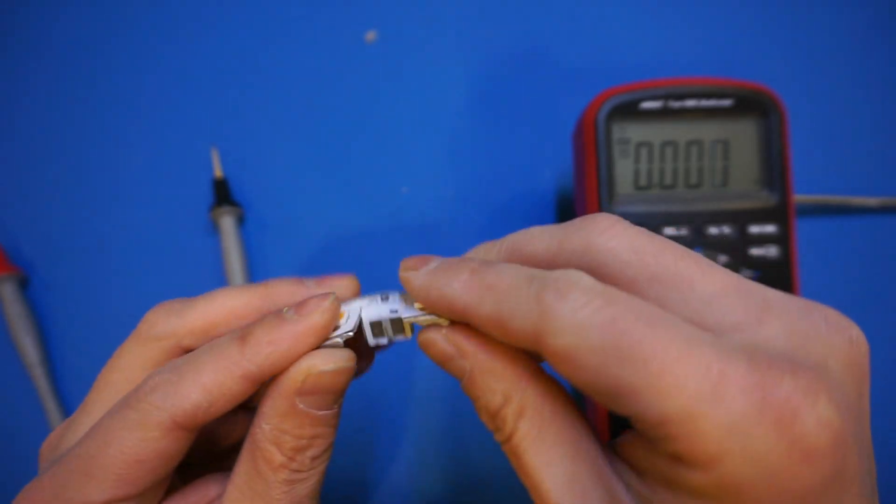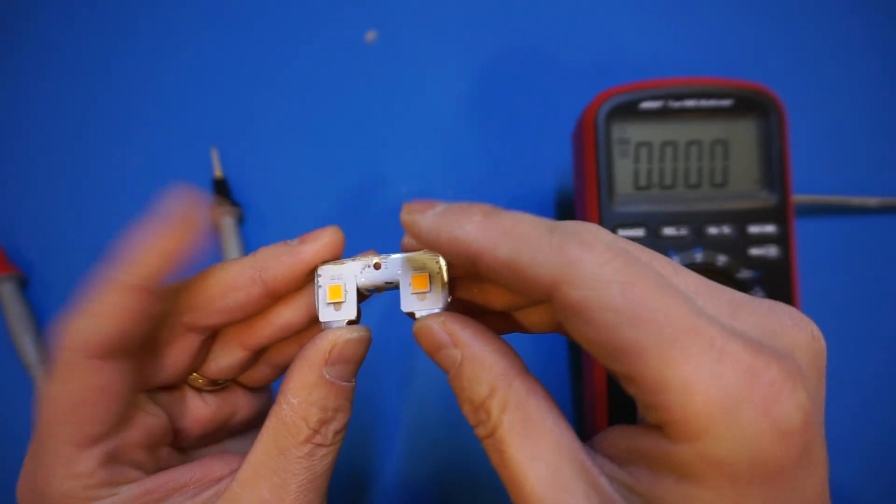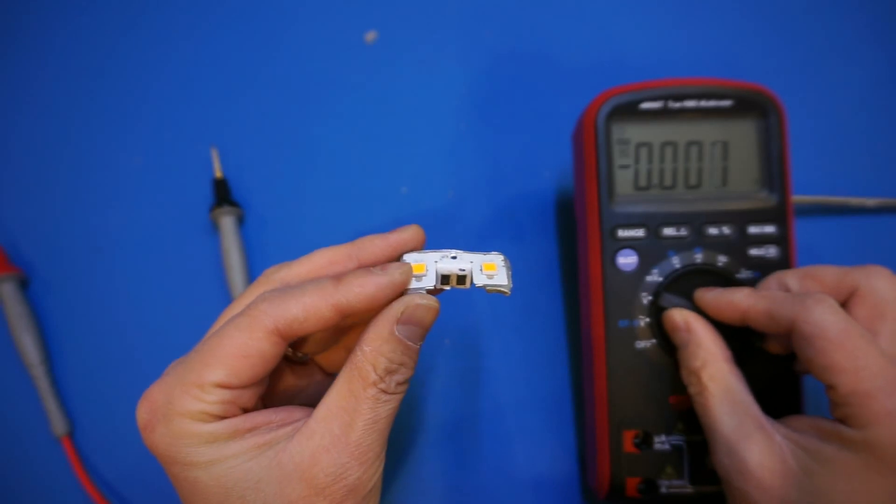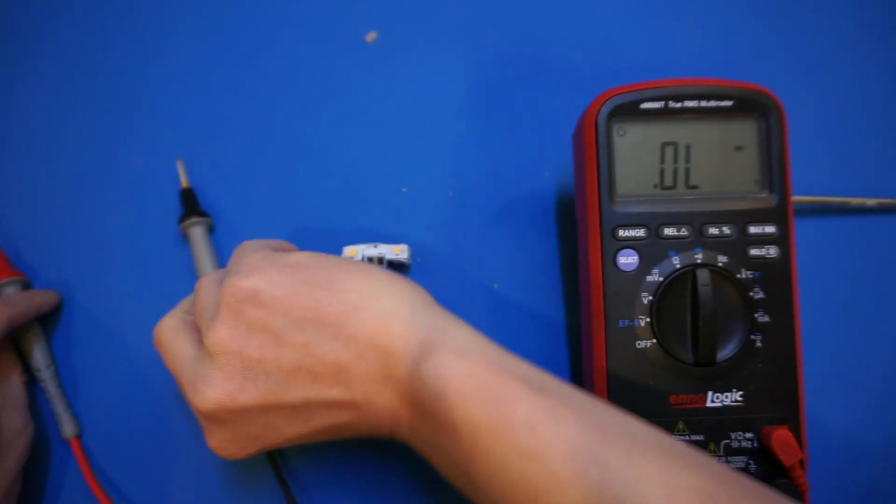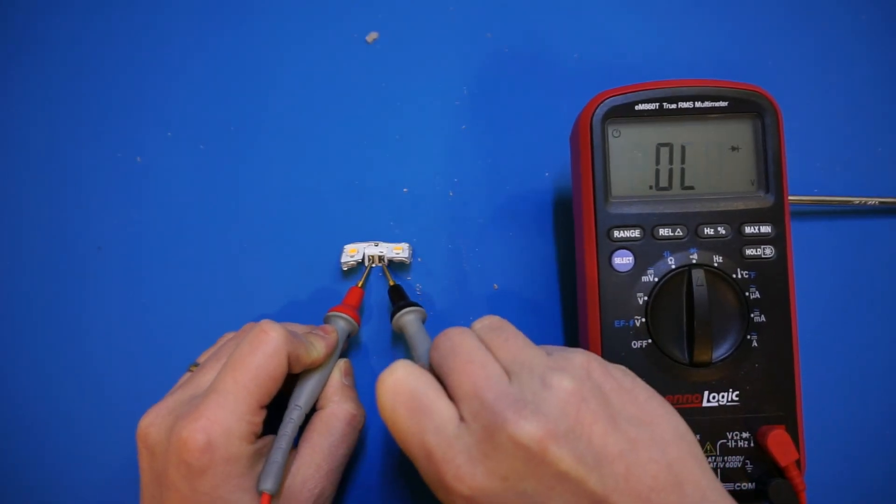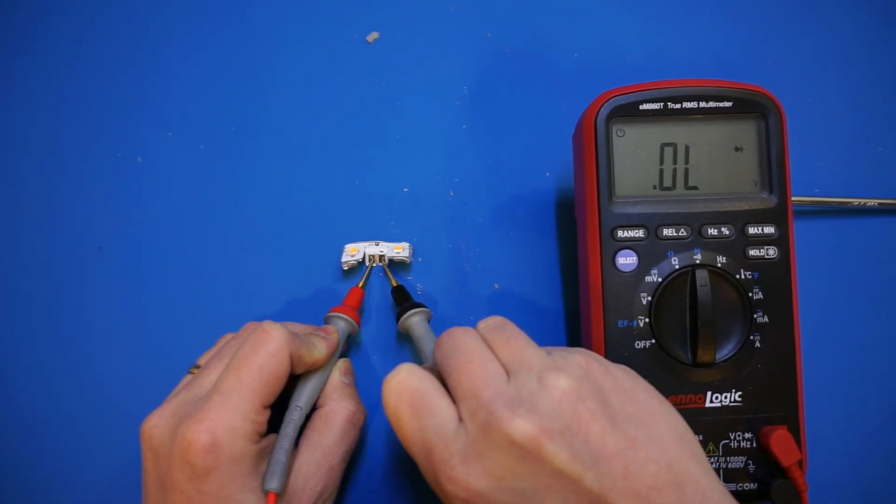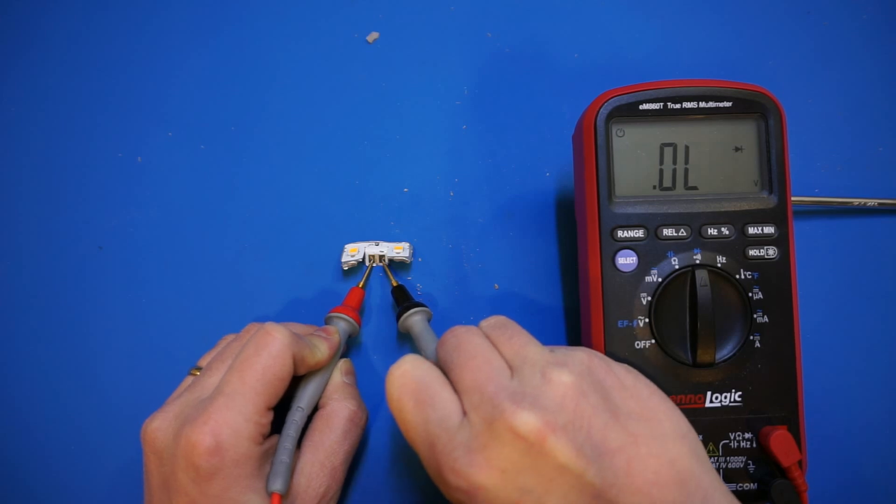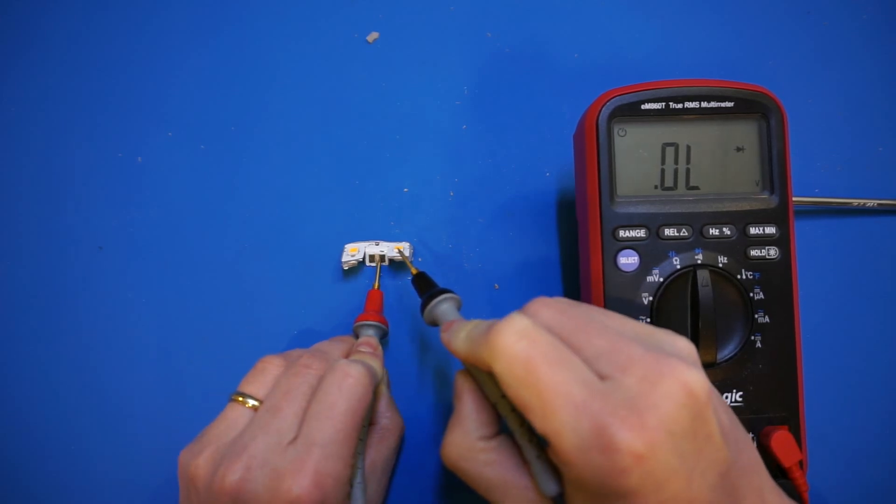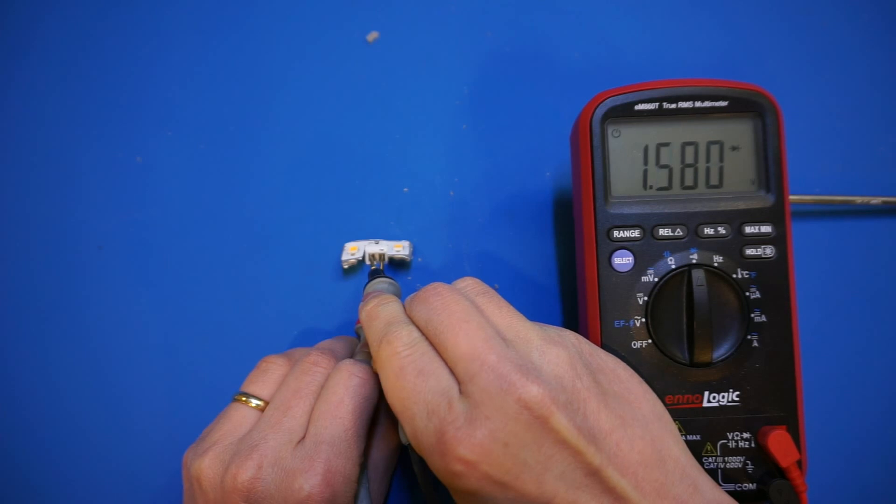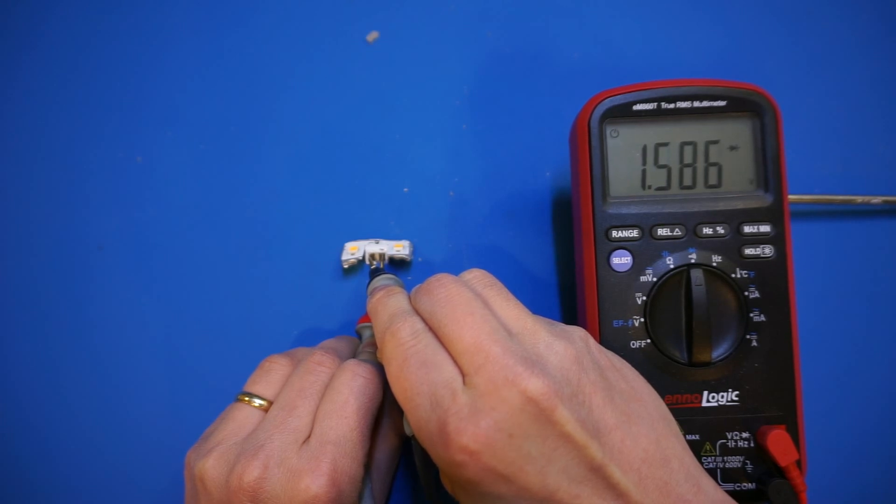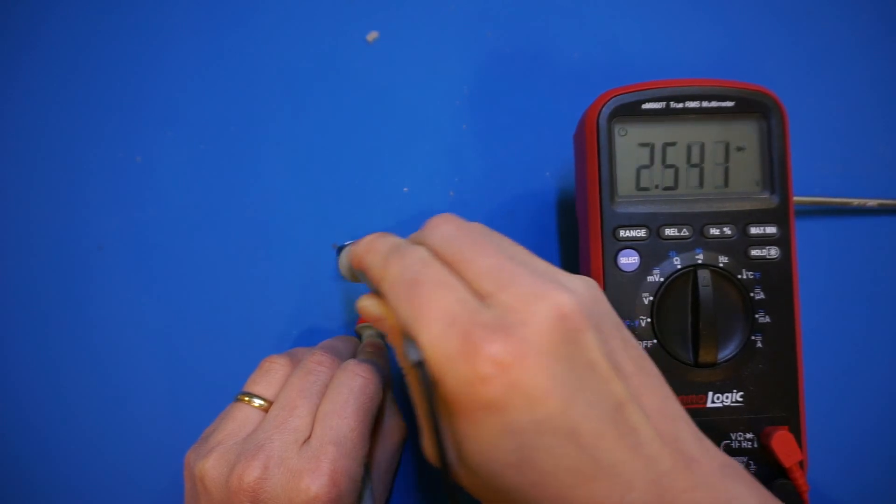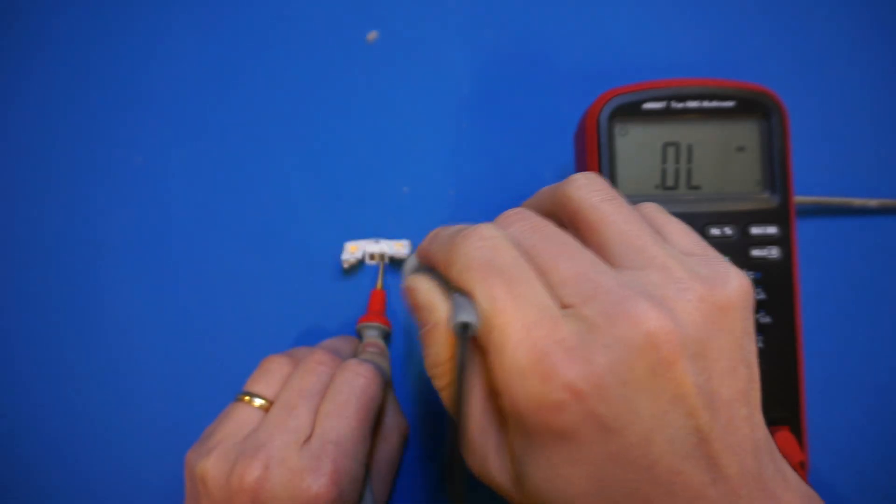But interestingly, these LEDs have a reverse diode on them. So as I will show you here, to prevent you from accidentally powering them backwards. So right now, if I do the forward, we cannot measure the voltage drop because it's more than 30 volts. However, if we do the reverse, you will see that there is a body diode. There are two of them, because these two are in series. So, which is very good. This definitely would help preventing you from connecting them accidentally backwards.